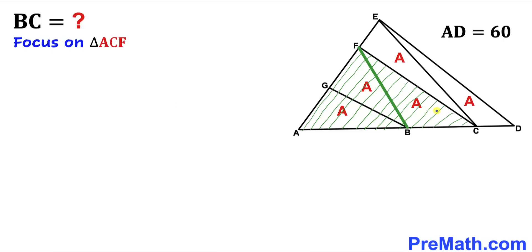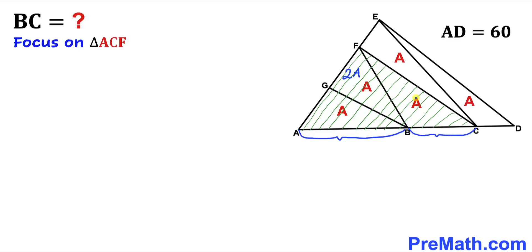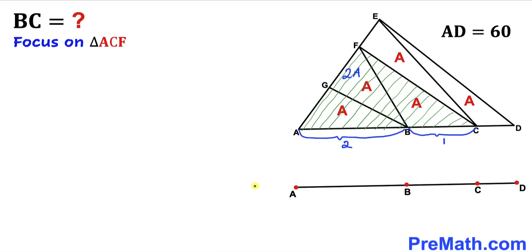Let's focus on triangle ACF. It has been divided into two triangles: the one on the left has area A, making a combined 2A on that side, and this triangle has area A. Their corresponding bases are AB and BC. Since the areas are 2A and 1A, the ratio of their bases is 2 to 1. So I'll represent distance AB with a circle-2 and distance BC with a circle-1.